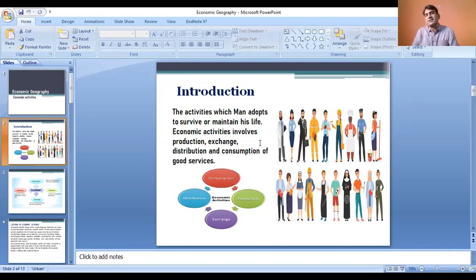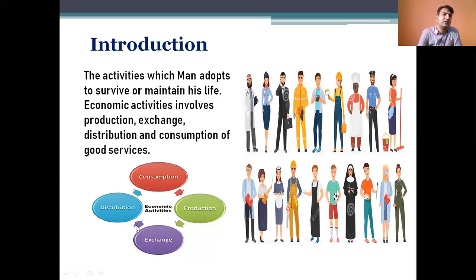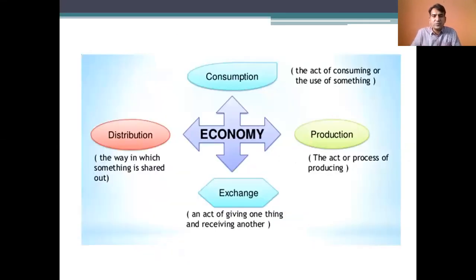For his survival and maintenance, man has always been working. Economic activities always involve production, exchange, distribution, and consumption of goods and services. The activities which men have adopted involve a cyclic structure: production, then exchange, then distribution, and then consumption. These are the main processes people are engaged in through different sorts of work, because life is not sedentary and we depend on each other.